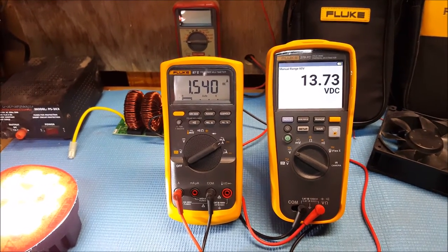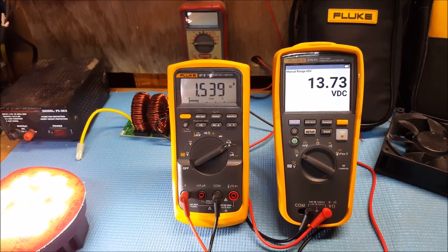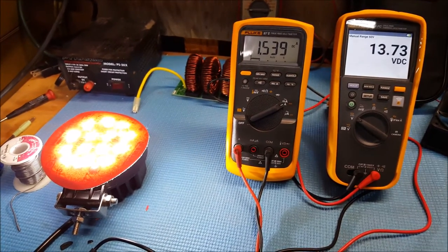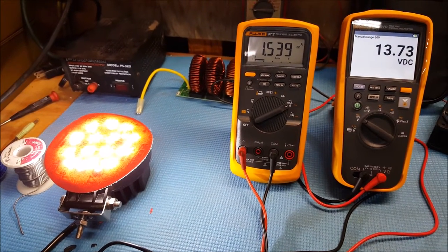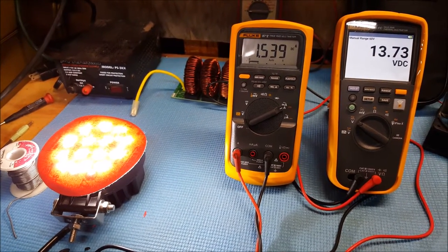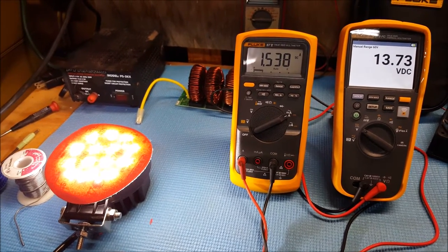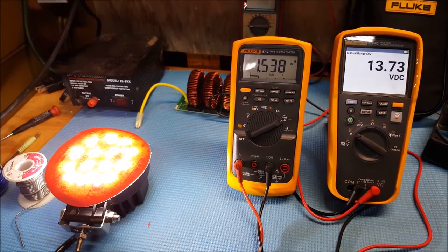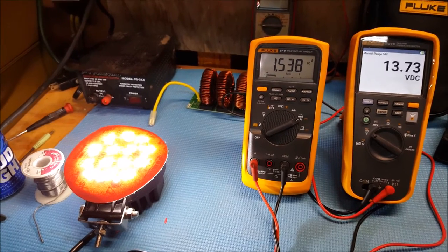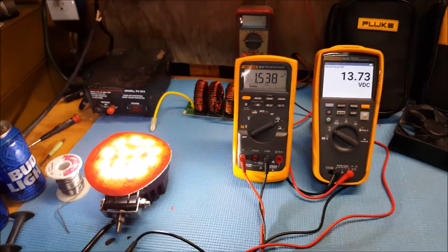So I think these LEDs off eBay and Amazon are rated to probably peak power or something, because I'm like getting nowhere, and I mean nowhere close to 42 watts.